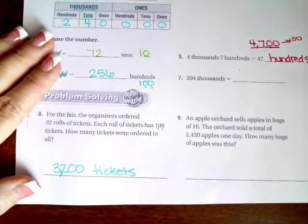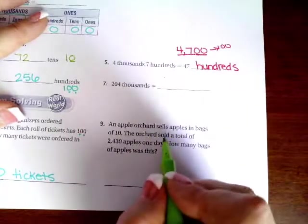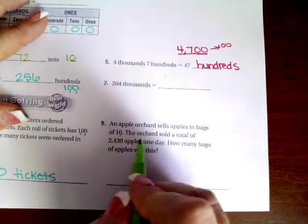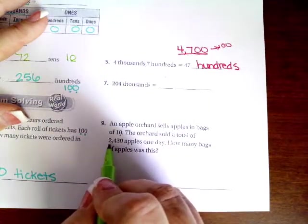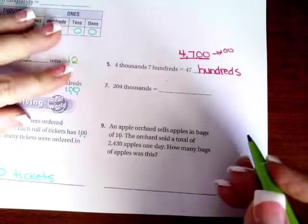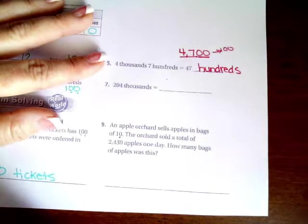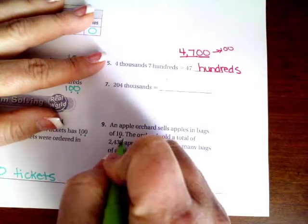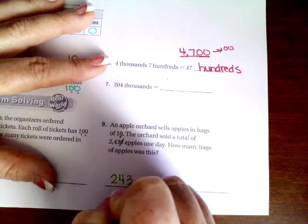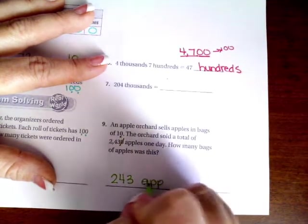Number nine. An apple orchard sells apples in bags of ten. The orchard sold a total of twenty two thousand four hundred and thirty apples in one day. How many bags of apples is this? Well, in ten there's one zero. I'm gonna take off that zero from the end. Two thousand two hundred forty three bags.